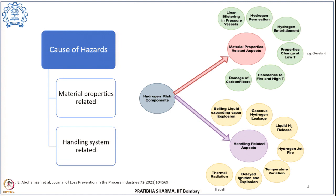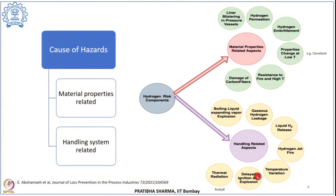A hydrogen jet fire is a high-velocity turbulent flame arising from combustion of a hydrogen-air mixture in the flammable range, released with very high momentum in a certain direction, which can lead to property damage and several injuries. If instead there is a delayed ignition after the gaseous hydrogen leakage, hydrogen gets time to mix with air, and then if an ignition source is present it can result in an explosion.